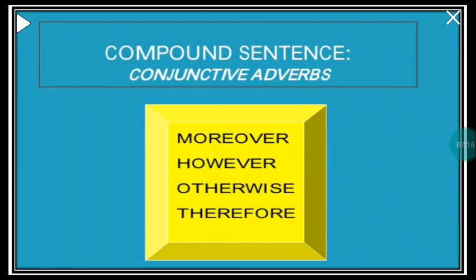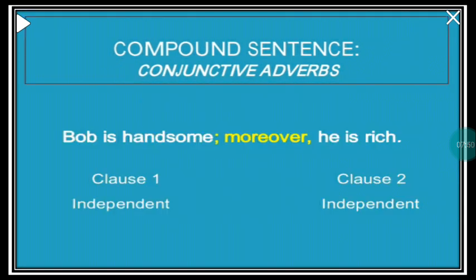In a compound sentence we can join two independent clauses not just by coordinating conjunctions — FANBOYS — but also by conjunctive adverbs. Conjunctive adverbs are made of two parts joined together: MORE+OVER, HOW+EVER, OTHER+WISE, THERE+FORE. That's why they are called conjunctive — joined by using an adverb and a conjunction. So: moreover, however, otherwise, and therefore are conjunctive adverbs. For example: 'Bob is handsome; moreover, he is rich.' 'Moreover' is the conjunctive adverb, 'Bob is handsome' is one independent clause, and 'he is rich' is the other.